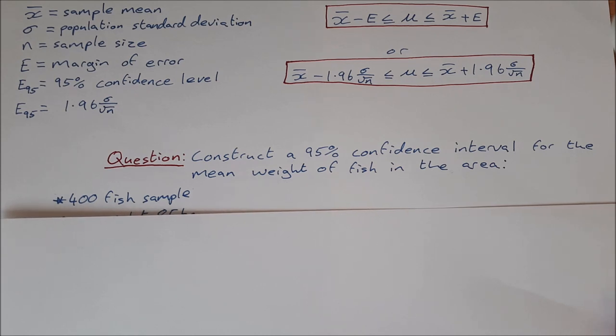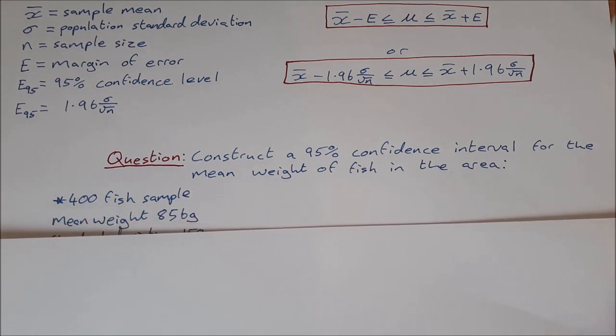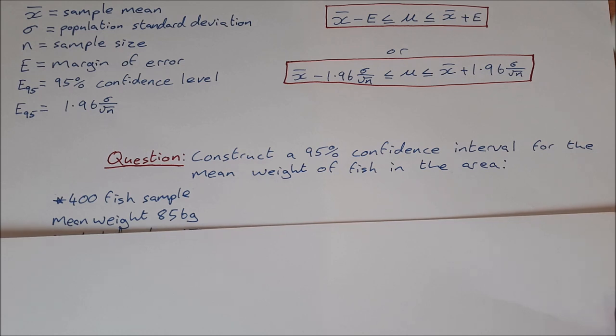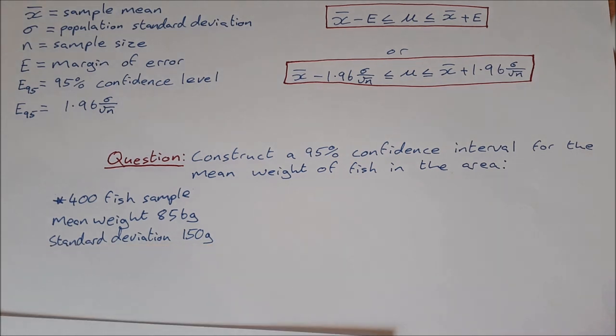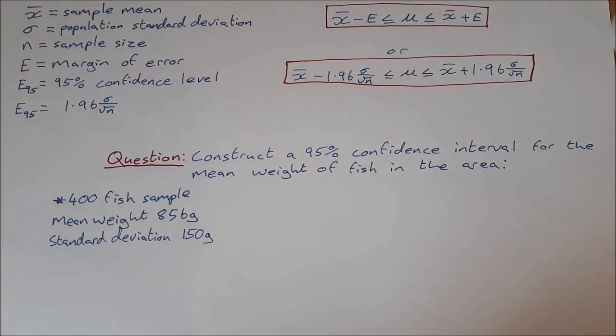The mean weight is 856 grams with a standard deviation of 150 grams. So we are asked to find the 95% confidence interval for the mean weight of all the fish in the area given this sample of 400 fish.